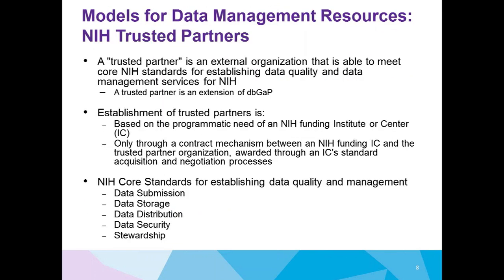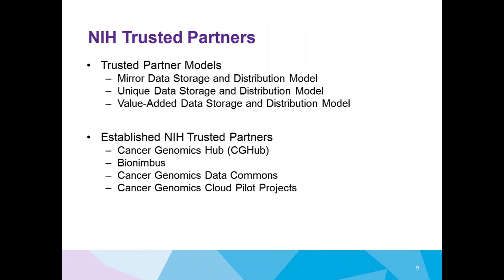An NIH trusted partner is an external organization able to meet the core NIH standards for establishing data quality and data management services for NIH. Trusted partners are essentially an extension of DbGAP, and any organization established as a trusted partner must meet the same policy and technical requirements that DbGAP meets. Establishment of trusted partners is based on the programmatic need of an NIH funding institute or center and is only established through an IC contract mechanism. The core standards are in five categories: data submission, data storage, data distribution, data security, and stewardship. There are several models — mirror image, unique data storage, and value added — and many trusted partners are in the value added category because they offer analytical tools not available through DbGAP.